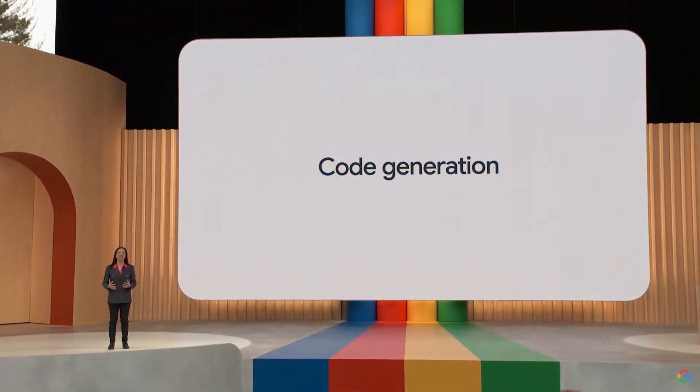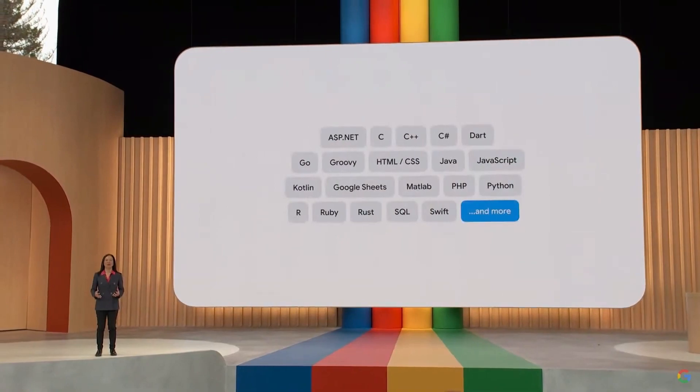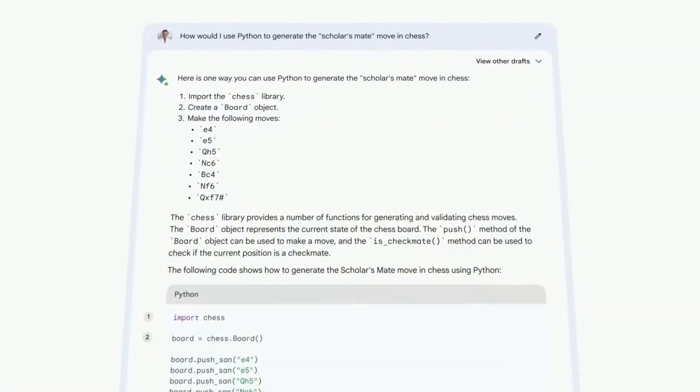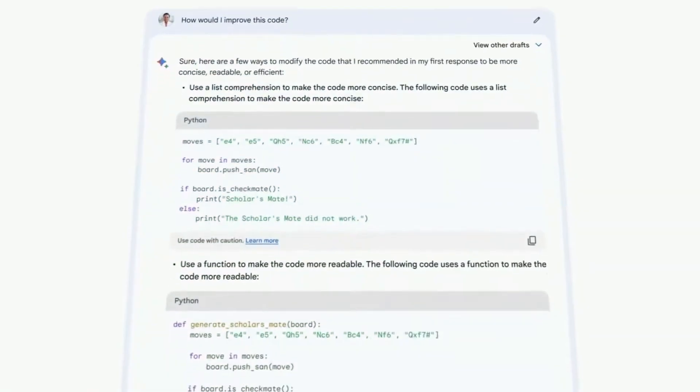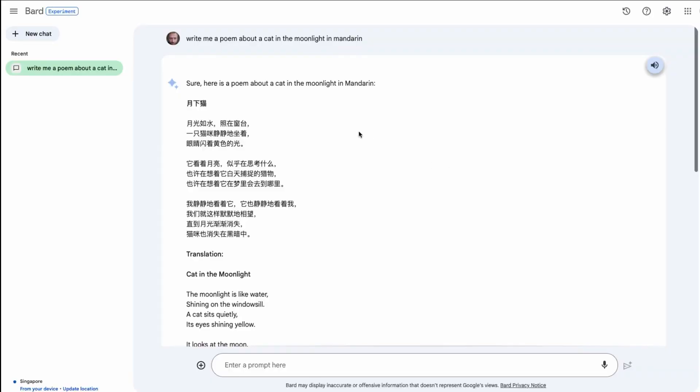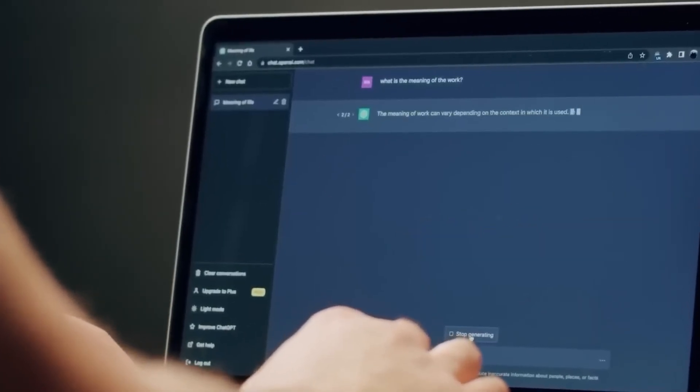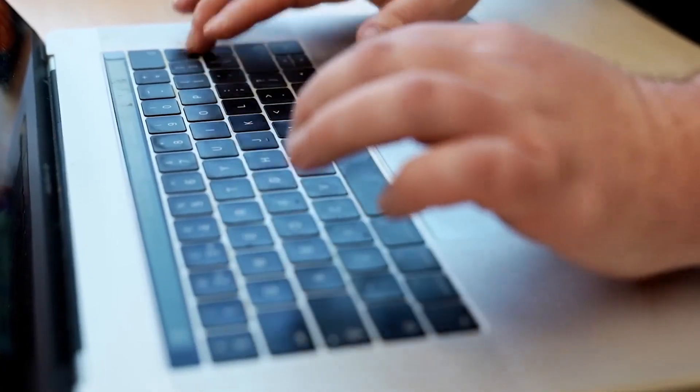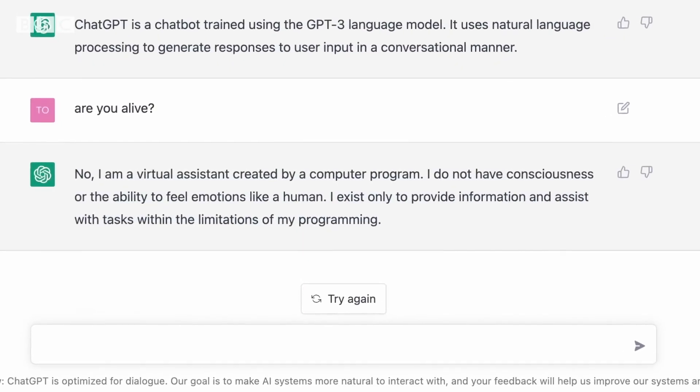Functionally, Bard is versatile. It efficiently offers factual responses, simplifies intricate topics, provides direct source links, generates code, and excels in logical reasoning and math. Its multilingual capability makes it adept at translating diverse languages seamlessly. ChatGPT, meanwhile, thrives in diverse conversations. Its strength lies in engaging users on a wide array of topics, generating insightful content, and addressing ethical problems with nuance.